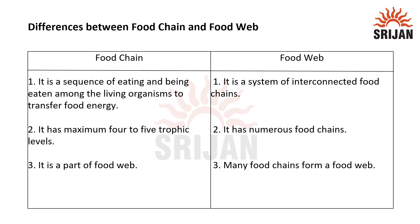Differences between food chain and food web. On this side we have food chain and here we have food web. Let's talk about their differences. Food chain is a linear sequence of eating and being eaten among living organisms to transfer food energy. Always remember: food chain is linear in nature, that is, one after another.